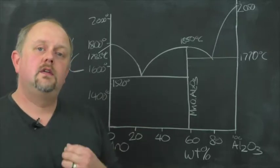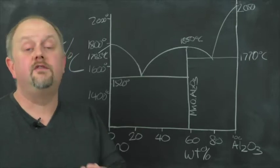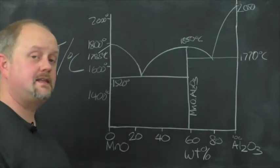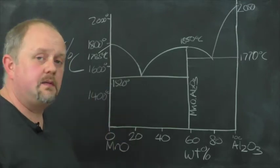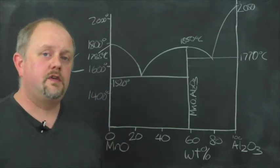The final thing we need to cover is to give an indication of any invariant points, particularly eutectics and peritectics, and so on. So, let's look at the example of the MnO-Al2O3 system.